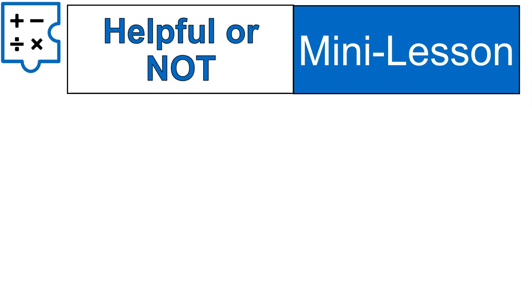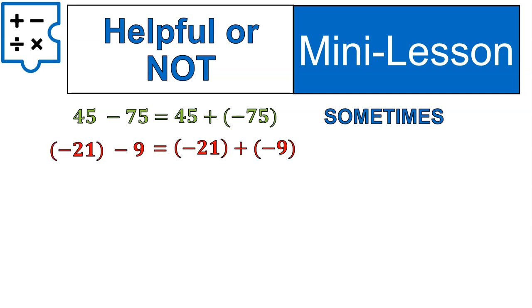Let's basically categorize some of these now. So if I have a subtraction expression like this 45 minus 75 and I switch it to 45 plus negative 75 that can be helpful sometimes. I'm going to put that into a sometimes category because depending on the numbers it may make sense to do that. In this situation negative 21 minus 9 writing it as negative 21 plus negative 9 to me I actually like it this way better. So I'm going to categorize this as helpful.